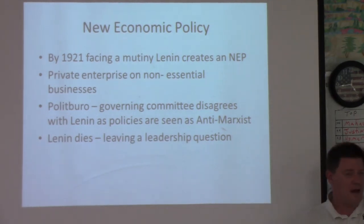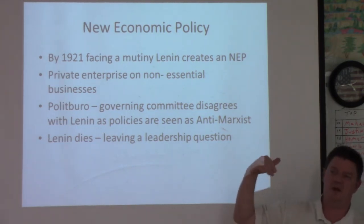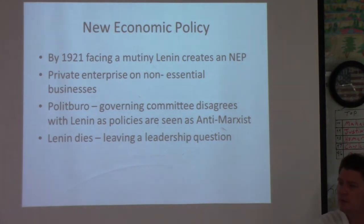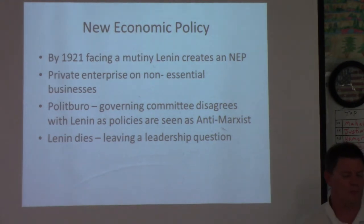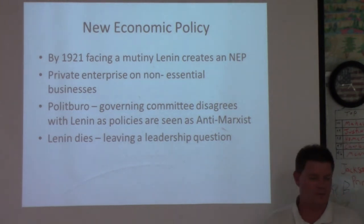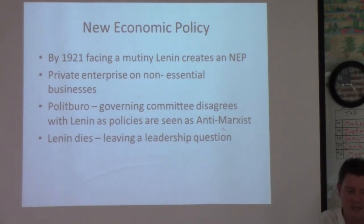Lenin worked tirelessly to reshape Russia. His ultimate endgame was to develop a perfect communist utopian society with no social class system, where society was governed by the people. For the very first time, the people were in control of the capital, and the proletariat would determine industrial production and how all land was used. But while Lenin tried really hard to capitalize on this goal, he never really completed it.